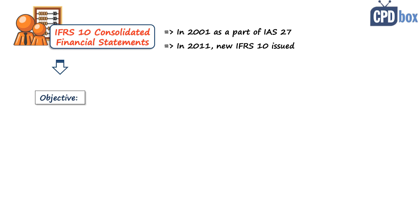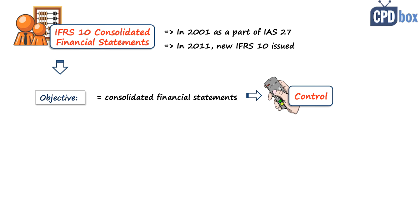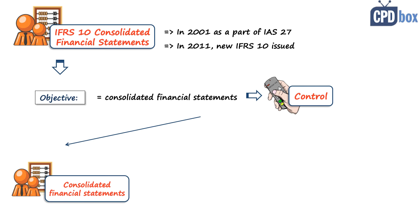This standard applies from 2013 onwards. The objective of IFRS 10 is to establish the rules on how to prepare and present the consolidated financial statements when you control one or more entities. In order to meet this objective, IFRS 10 first sets the requirements: if you control one or more other entities, then you must present consolidated financial statements.